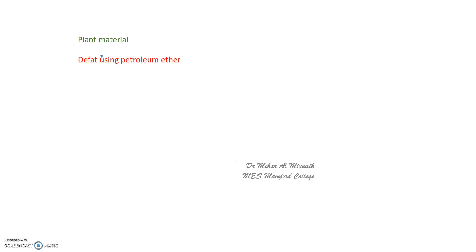In the first method, take the plant material and de-fat it using petroleum ether — that is, treat it to remove lipids and fats. This is called de-fatting. After de-fatting, moisten the plant material and make it alkaline using sodium carbonate, potassium carbonate, ammonia, or even calcium hydroxide.